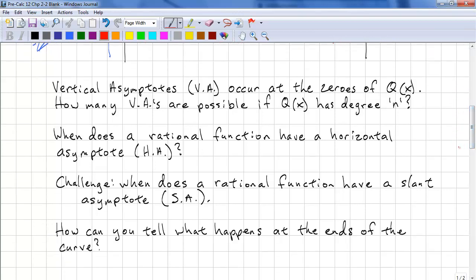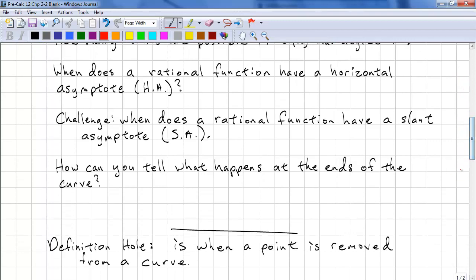You want to explore when does a rational function have a horizontal asymptote. And as a challenge, try to figure out when does a rational function have a slant asymptote. Think about how you can tell what happens at the ends of the curve.